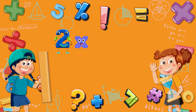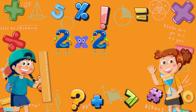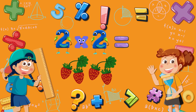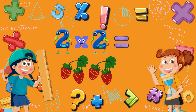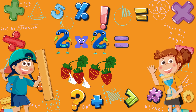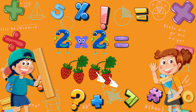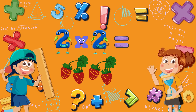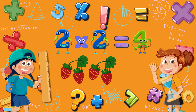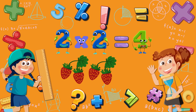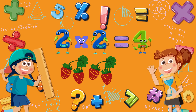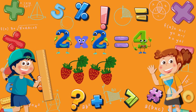Two times two is equal to? Two branches, each with two strawberries. Two strawberries on the first branch, and two on the second. Two plus two is equal to four. Great. Two times two is equal to four.